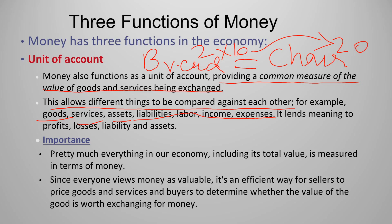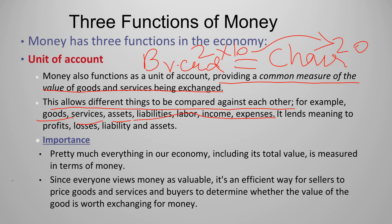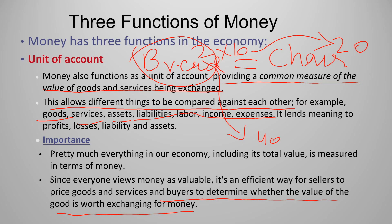It's such an important function because it allows goods to be exchanged at fair value. For example, if a seller is selling bread for $40, you would immediately say it's too expensive. So the unit of account function allows buyers to determine whether the value of a good is worth exchanging money for, and at the same time allows sellers to set their own prices. Unit of account is a very important function of money.